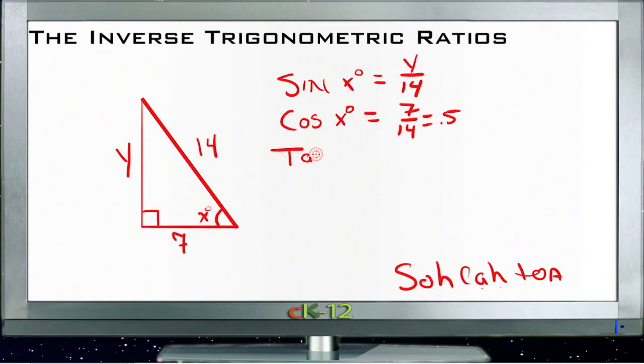And then if we wanted to find the tangent of X degrees, tangent is opposite over adjacent. So we'd have Y over 7.